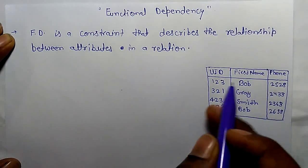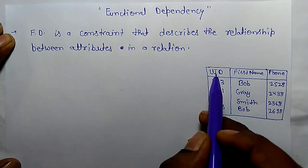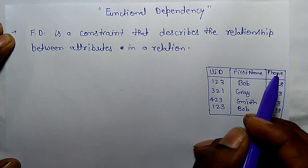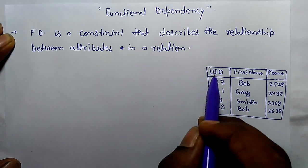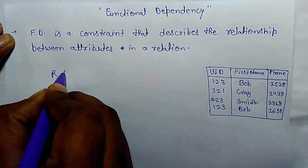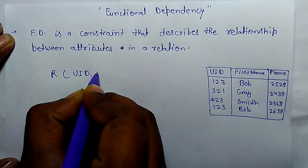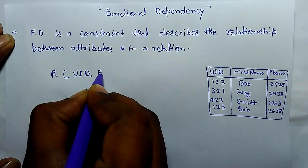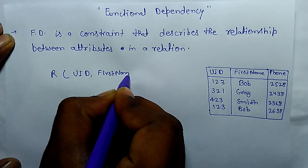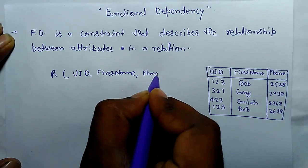For example, this is a table. In this table, uid, first name, and phone number are attributes. And the relation of the table is uid, first name, and phone number.